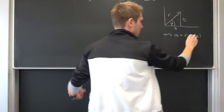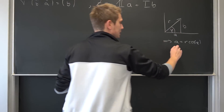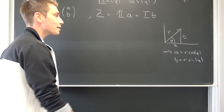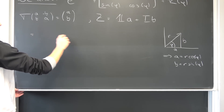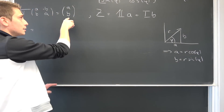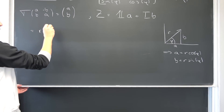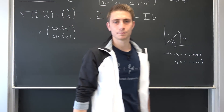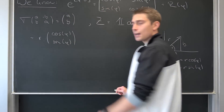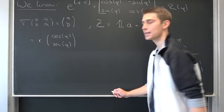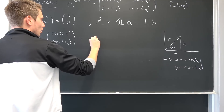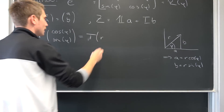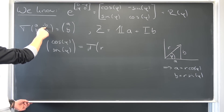We can do the same for b: b equals r times the sine of phi. Now let us plug this into our vector. We end up with a common factor of r — this is simply a scalar in our vector space R² — meaning we can bring r outside: r times the vector (cos φ, sin φ). This resulting vector is simply a vector in R², meaning we can apply our transformation backwards and end up with r times T, and since T is a linear mapping we can bring r inside of T.